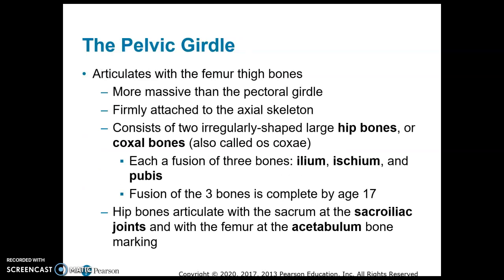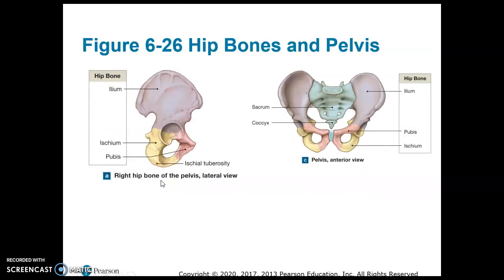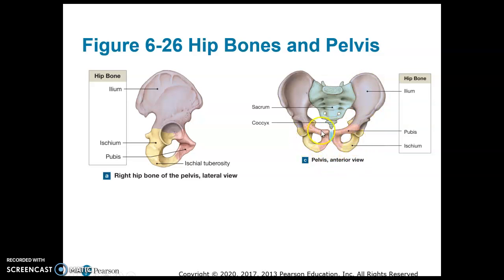The pelvic girdle consists of the ilium, the ischium, and the pubis. The ilium is the largest — the wider bones have a shape like a bowl. The ischium is the yellow bone shown here, and the pubis is the one that is most medial.